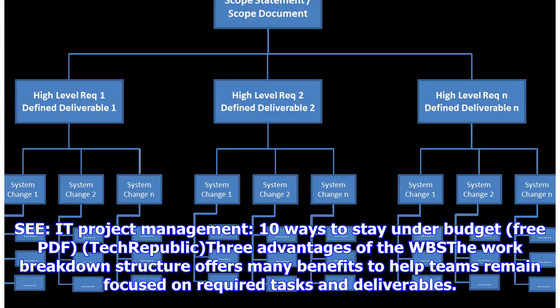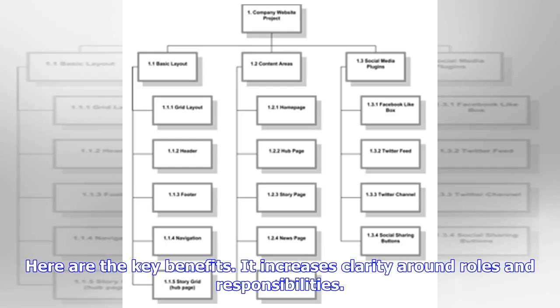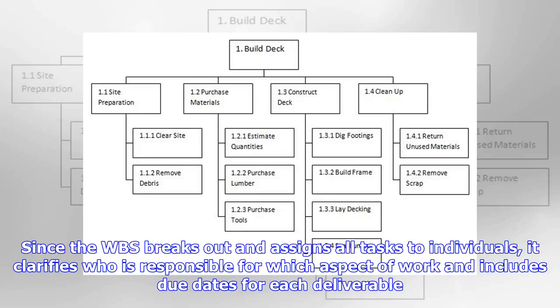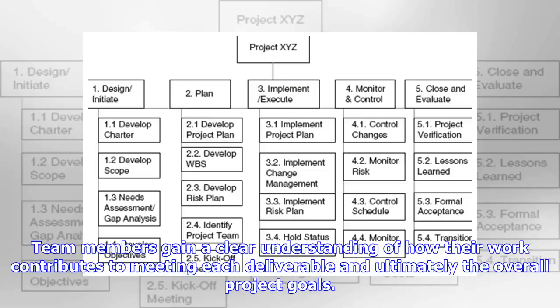The work breakdown structure offers many benefits to help teams remain focused on required tasks and deliverables. Here are the key benefits. It increases clarity around roles and responsibilities. Since the WBS breaks out and assigns all tasks to individuals, it clarifies who is responsible for which aspect of work and includes due dates for each deliverable. Team members gain a clear understanding of how their work contributes to meeting each deliverable and ultimately the overall project goals.